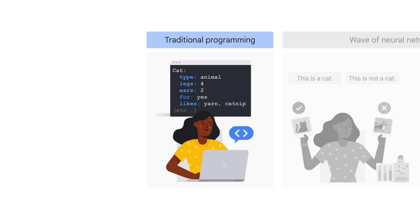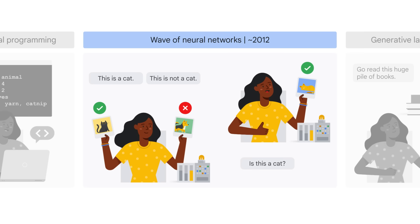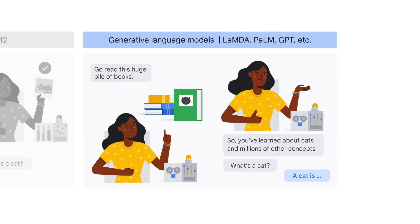We've come a long way from traditional programming to neural networks to generative models. In traditional programming, we used to hard-code the rules for distinguishing a cat — type: animal, legs: 4, ears: 2, fur: yes. In the wave of neural networks, we could give the network pictures of cats and dogs and ask, is this a cat? In the generative wave, we as users can generate our own content, whether it be text, images, audio, video, or other. Models like PaLM or LaMDA — language model for dialogue applications — ingest very large data from multiple sources across the internet and build foundation language models we can use simply by asking a question, whether typing it into a prompt or verbally talking into the prompt. So when you ask it what's a cat, it can give you everything it has learned about a cat.